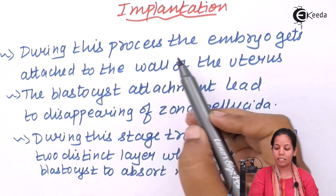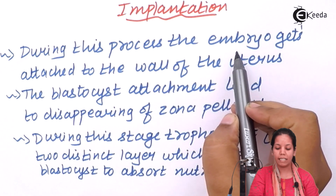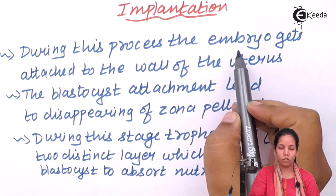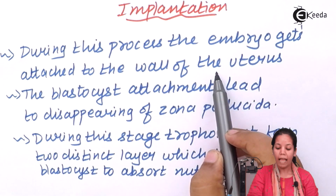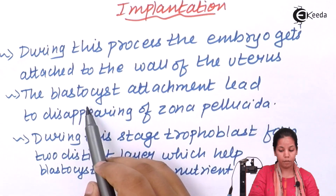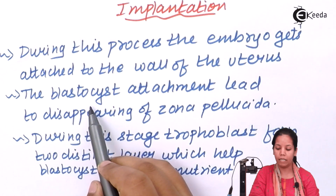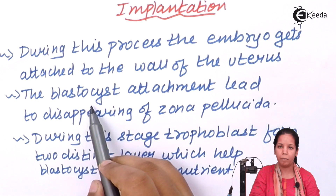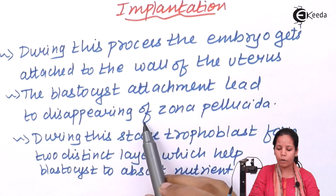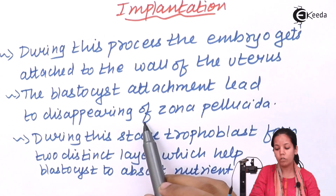During this process the embryo basically gets attached to the wall of the uterus, and the blastocyst or the embryo, which has a number of germ layers, will now start developing after the attachment. Also at this point there will be disappearing of the zona pellucida region.